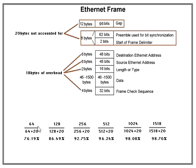When you do the calculation — you take 64 bytes and divide it by 64 plus 20, which is 84 — you get 76 percent efficiency. You're losing about a quarter of your bandwidth just for those unused bytes used for synchronization and the gap.